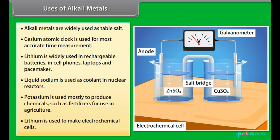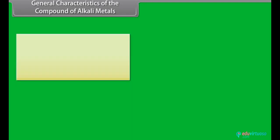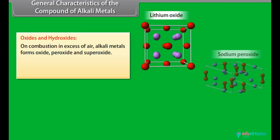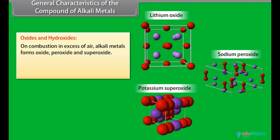Lithium is used to make electrochemical cells. General characteristics of the compounds of alkali metals: oxides and hydroxides. On combustion in excess of air, alkali metals form oxides, peroxides, and superoxides.